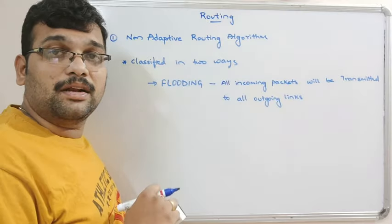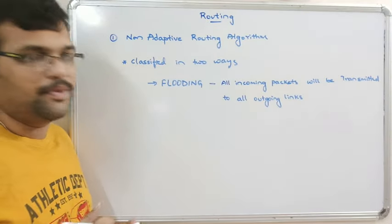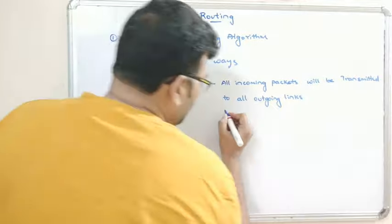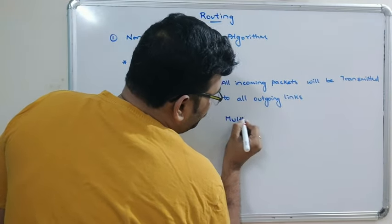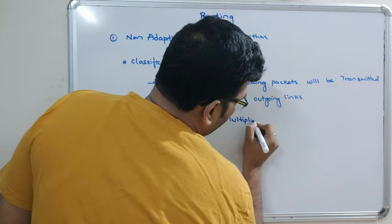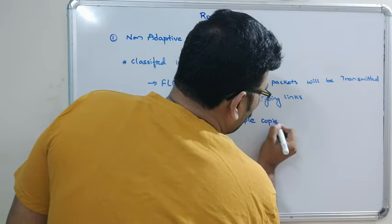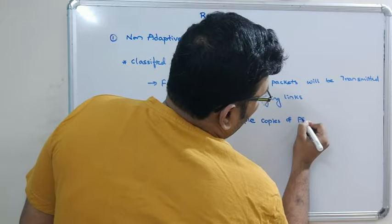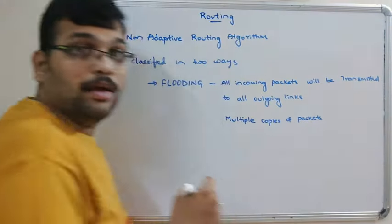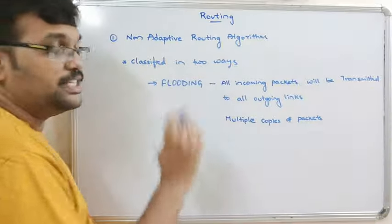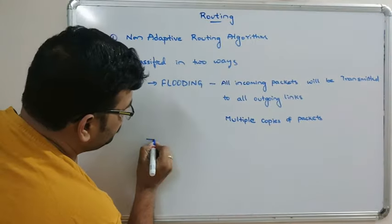There is a disadvantage in flooding: every router will be having multiple copies of packets. Multiple copies of packets will be received — that is the main disadvantage.